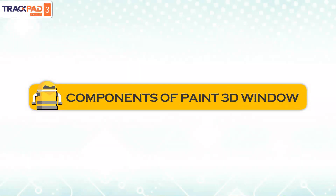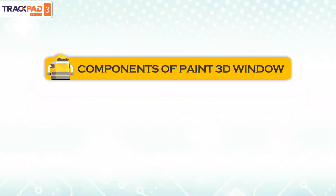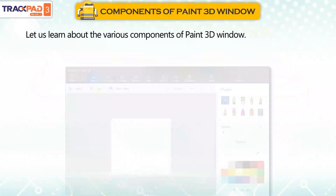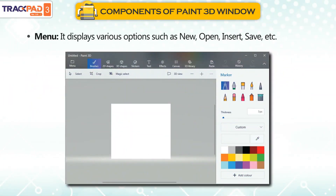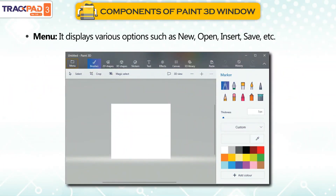Components of Paint 3D Window. Let us learn about the various components of Paint 3D Window. Menu: It displays various options such as New, Open, Insert, Save, etc.